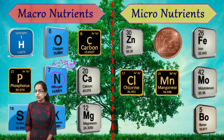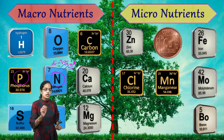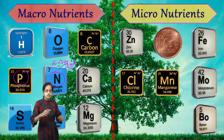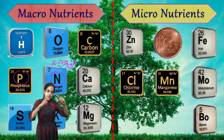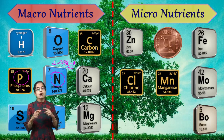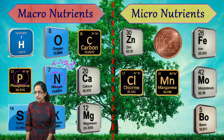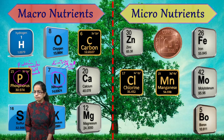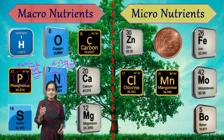The next major macronutrient is phosphorus. Phosphorus is a constituent of cell membranes, and it is also found in proteins and nucleic acids. So proteins, nucleic acids, and cell membranes are the regions where constant use of phosphorus is seen.